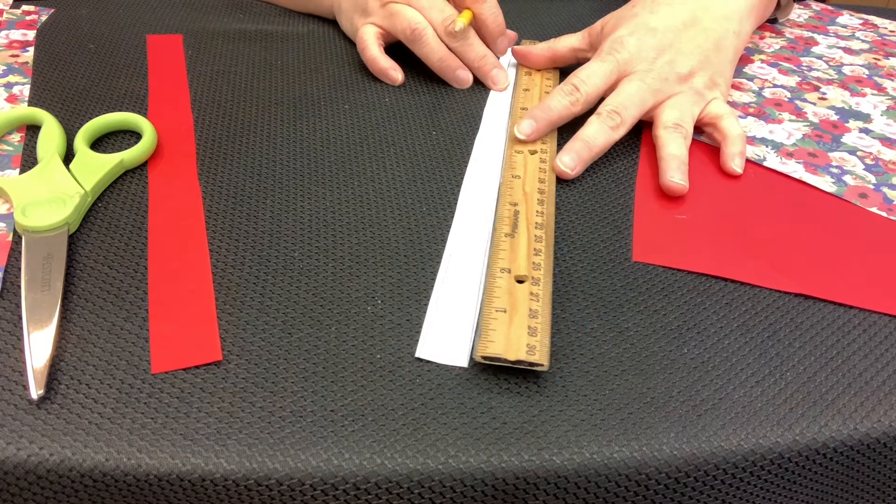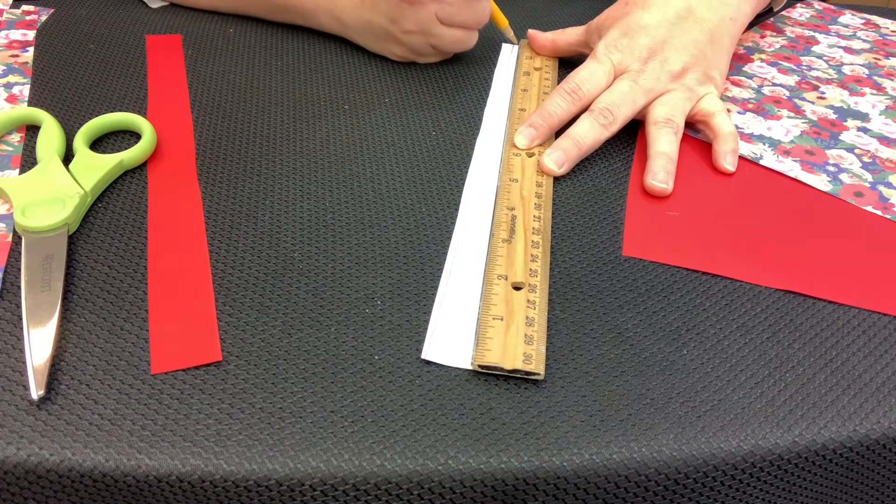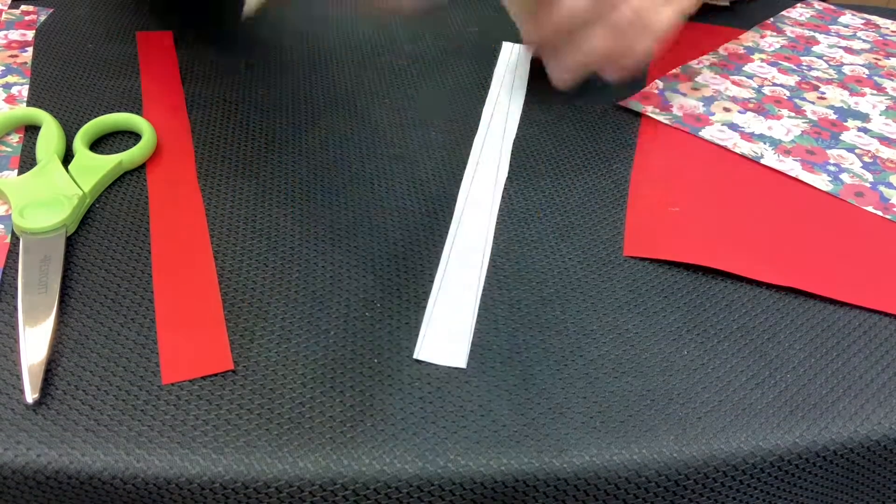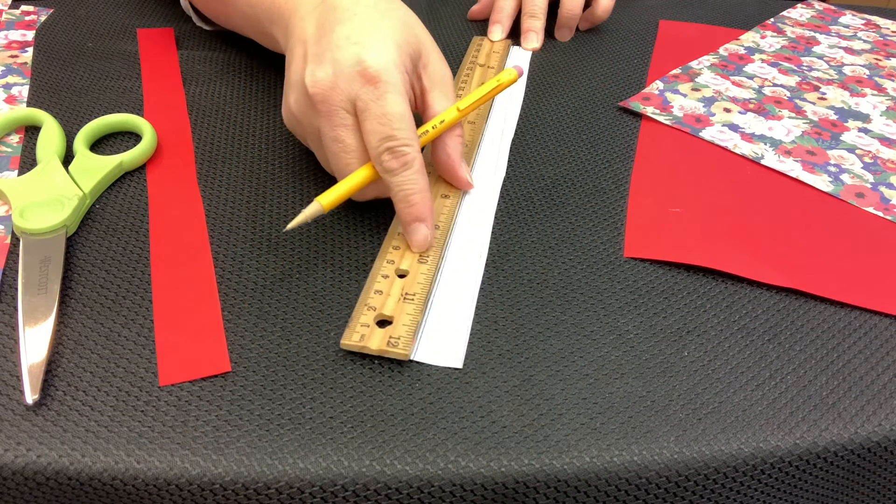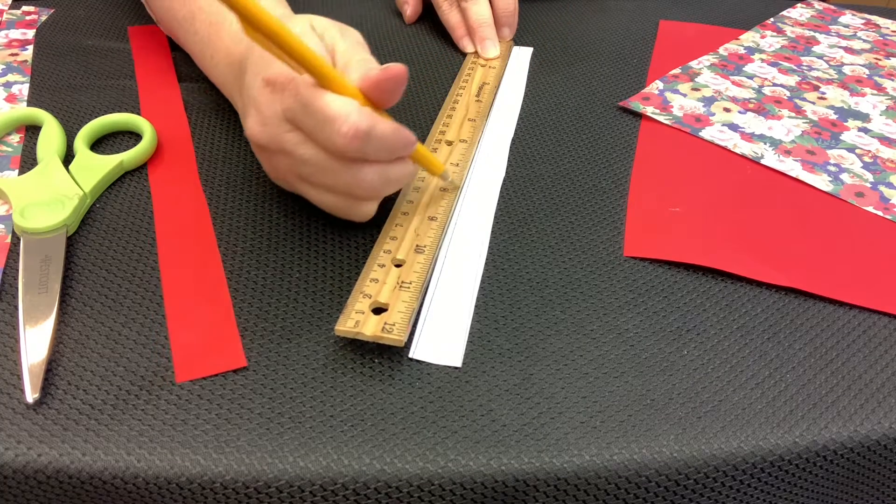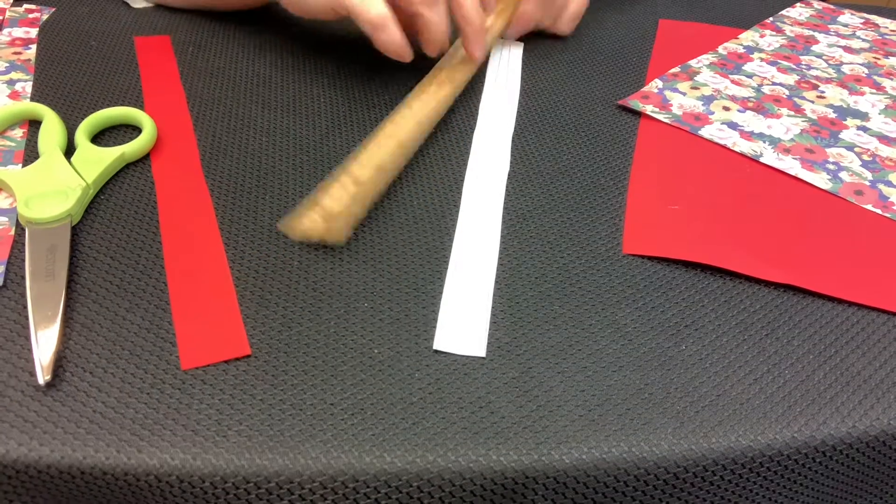And then you're going to measure diagonally from one of the points to the end of the other end of the strip. You can do it on both sides, so it'll be a diagonal from the top to the edge to the corner of the bottom.